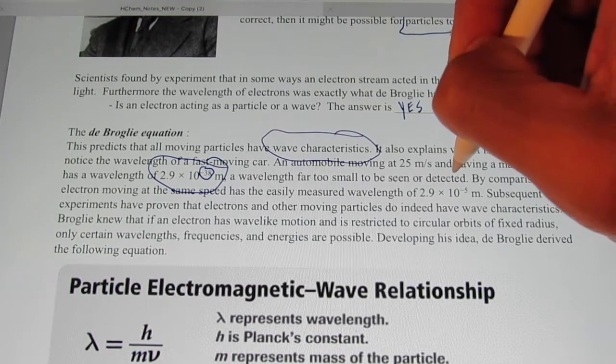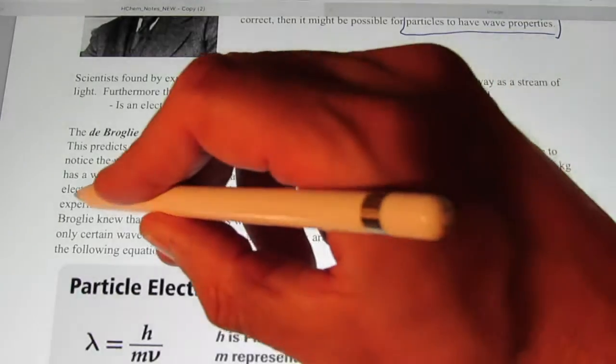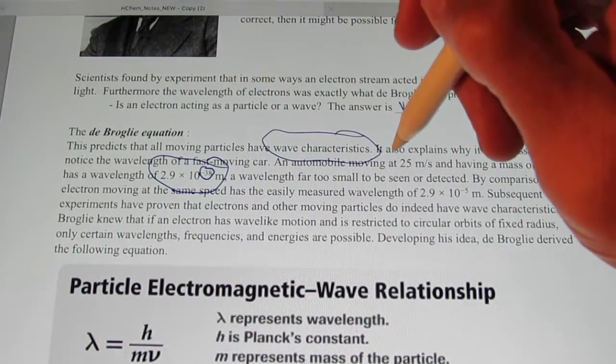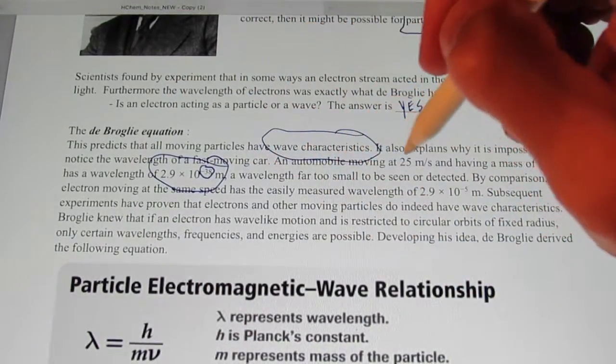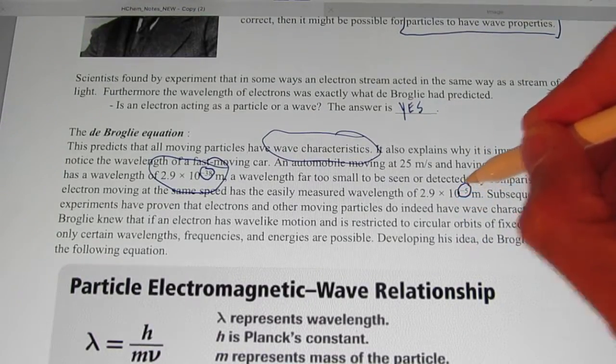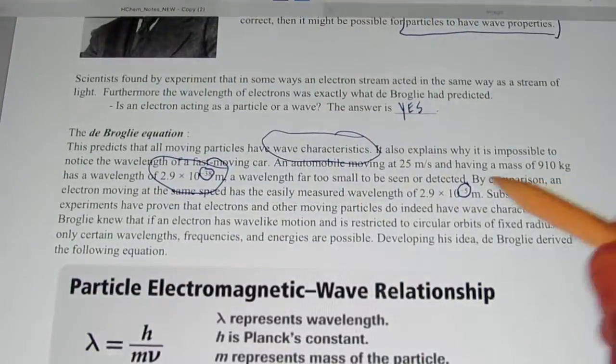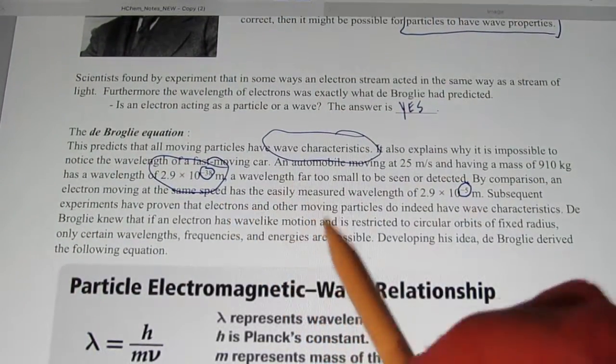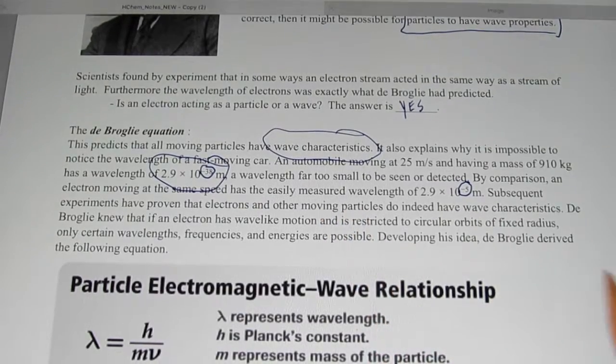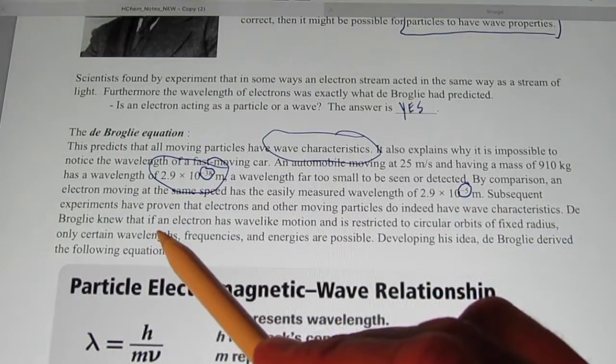Now by comparison, what if we have a really, really tiny object, like an electron moving at the same speed? It has an easily measured wavelength of 2.9 times 10 to the negative 5th meters, because its size is so small. Subsequent experiments have proven that electrons and other moving particles do indeed have wave characteristics.